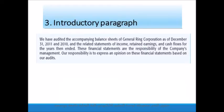The first paragraph in the auditor's report is the introductory paragraph. Reading from the standard unqualified report on comparative statements for a public company: 'We have audited the balance sheets of General Ring Corporation as of December 31, 2011 and 2010, and related statements of income, retained earnings and cash flows. These financial statements are the responsibility of the company's management. Our responsibility is to express an opinion on these financial statements based on our audit.'